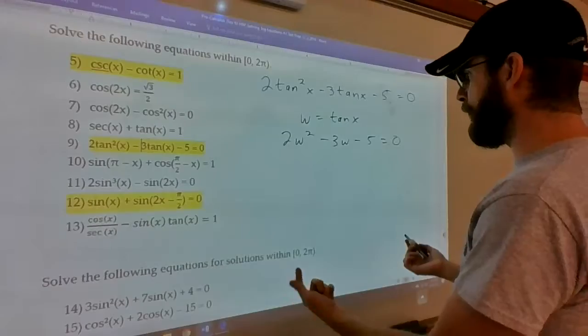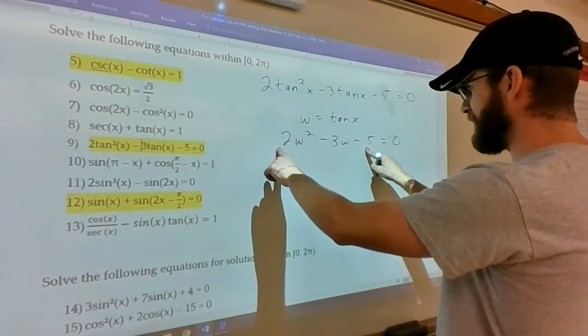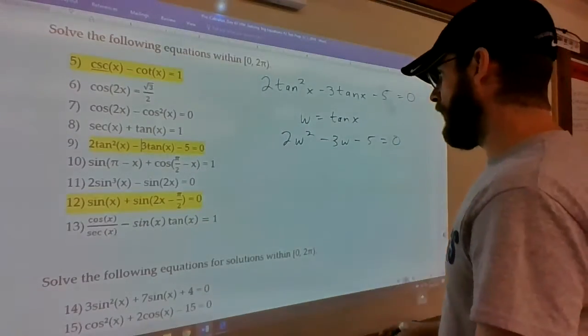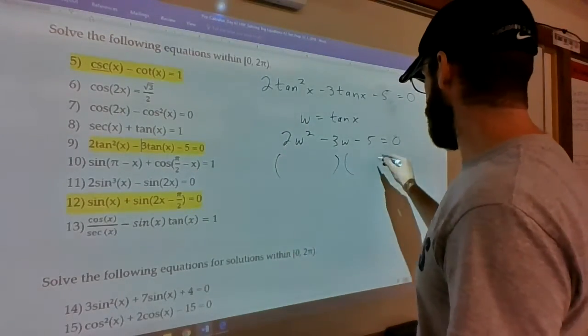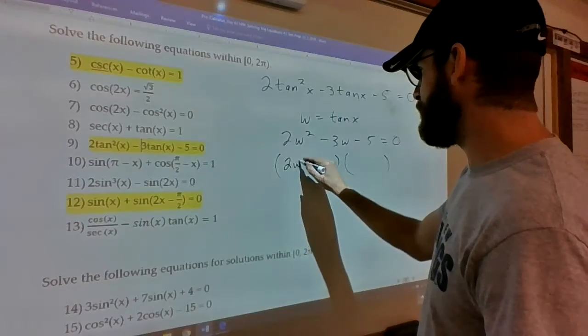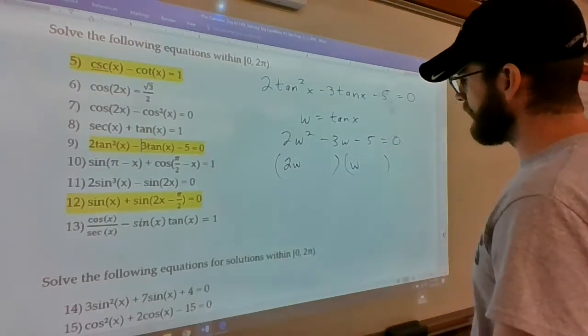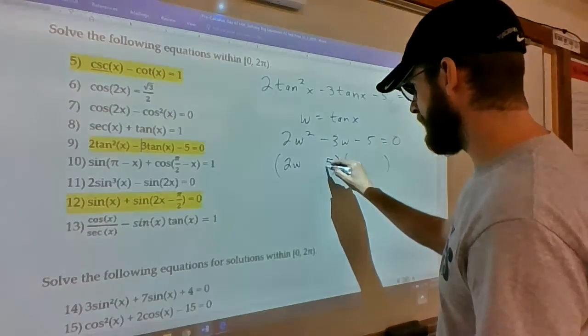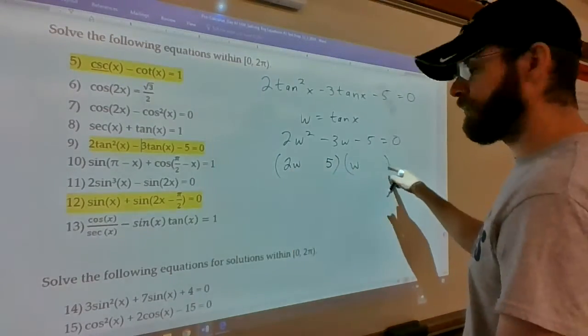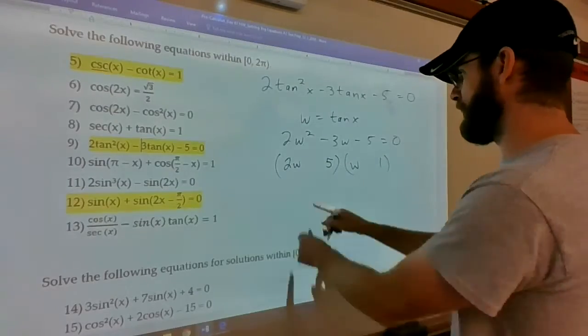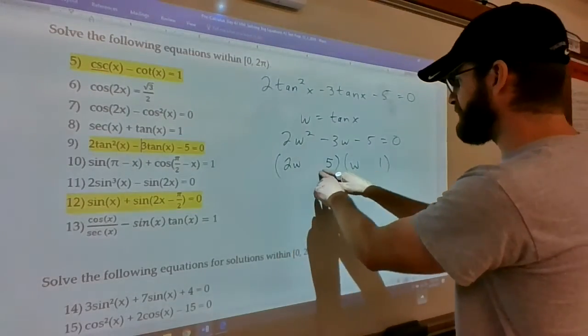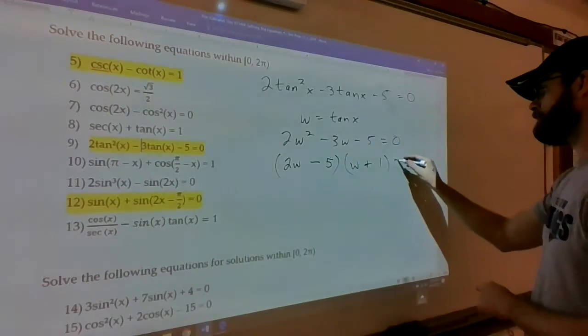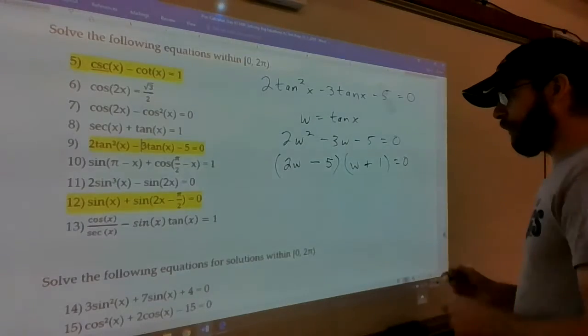And I know it's factorable because -10 has factors of 2 times -5, which add up to -3. So, if we did a little guessing and checking here, it's got to be 2w times w. And it's got to be 5 times 1, but you want the 5 here, so it's not being multiplied by the 2 over here. So, there's 2 times 1 and 5 times w. The bigger one needs to be negative. So, that works.